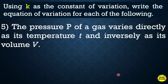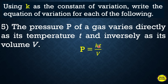Example 5: The pressure P of a gas varies directly as its temperature T and inversely as its volume V. So that is P = KT/V. That is how we translate a given statement into an equation using combined variation.